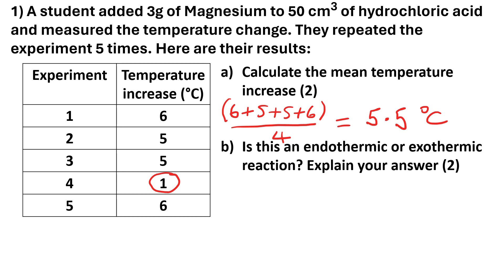Question B: is this an endothermic or exothermic reaction? Explain your answer. The results table tells us it's a temperature increase. That tells us it's an exothermic reaction, because exothermic reactions give out heat energy to their surroundings and therefore warm up the surroundings.